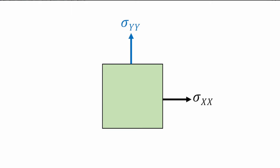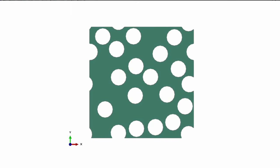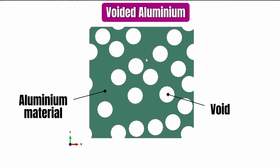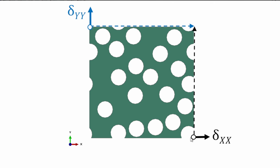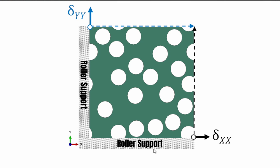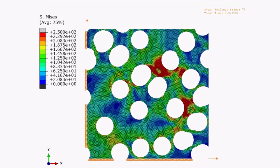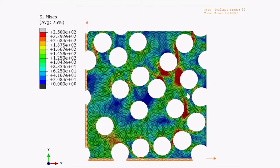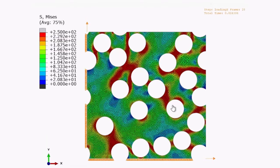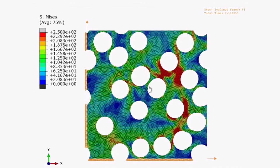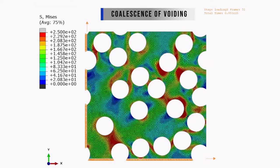We're going to carry on with this analysis based on this 2D problem. The system we're going to study is a voided aluminium system where the white circles represent the voids and the green regions are aluminium material. We apply a load at a corner node with displacements in x and y, connected to the surfaces via roller-supported boundary conditions to create biaxial deformation. Results show plastic strain accumulation and void coalescence — voids agglomerating and forming a unified system.